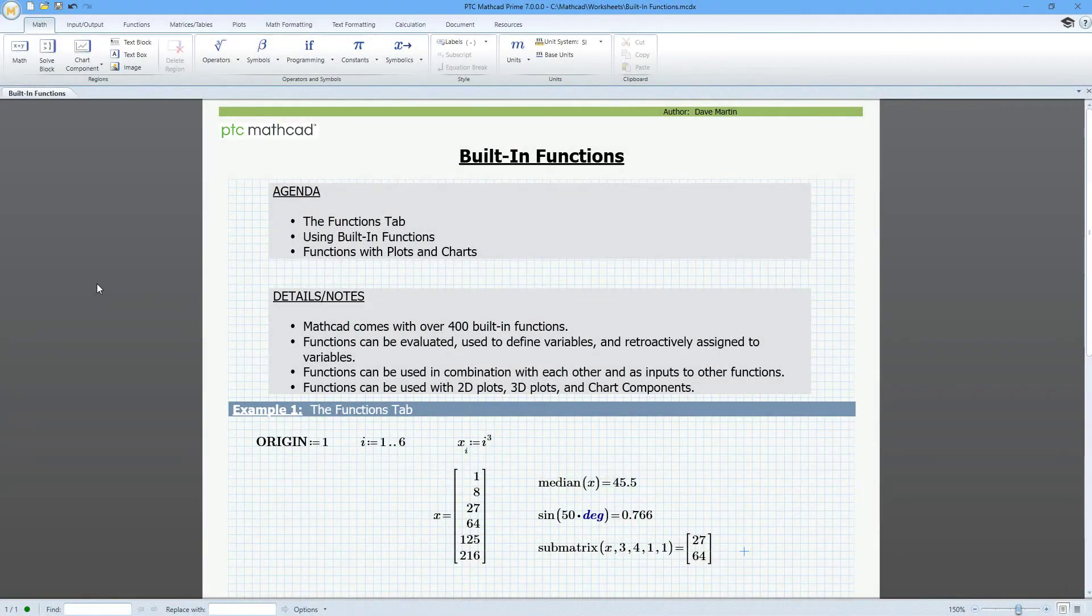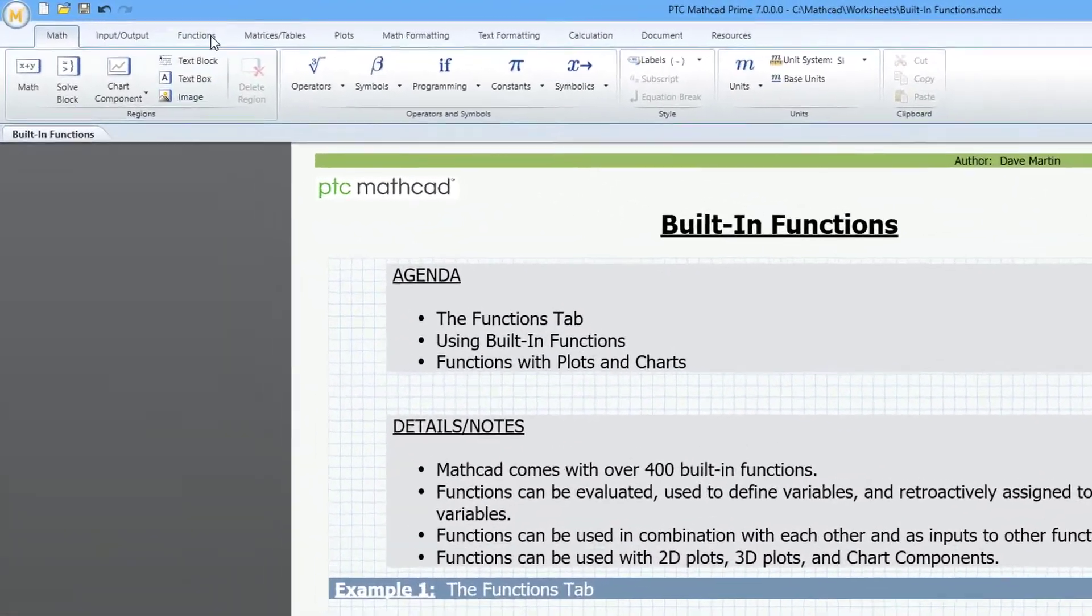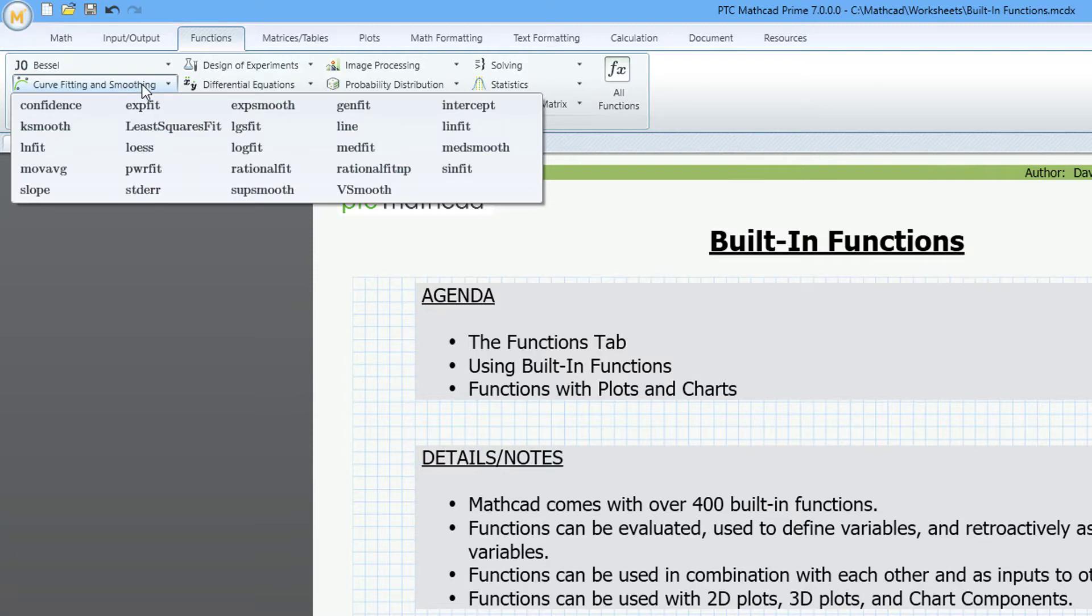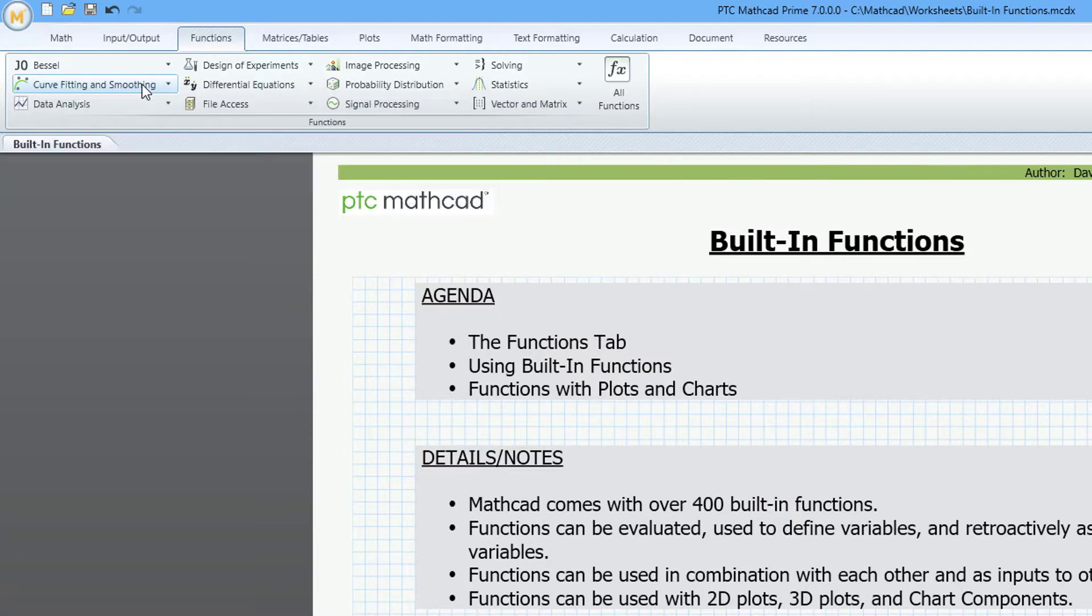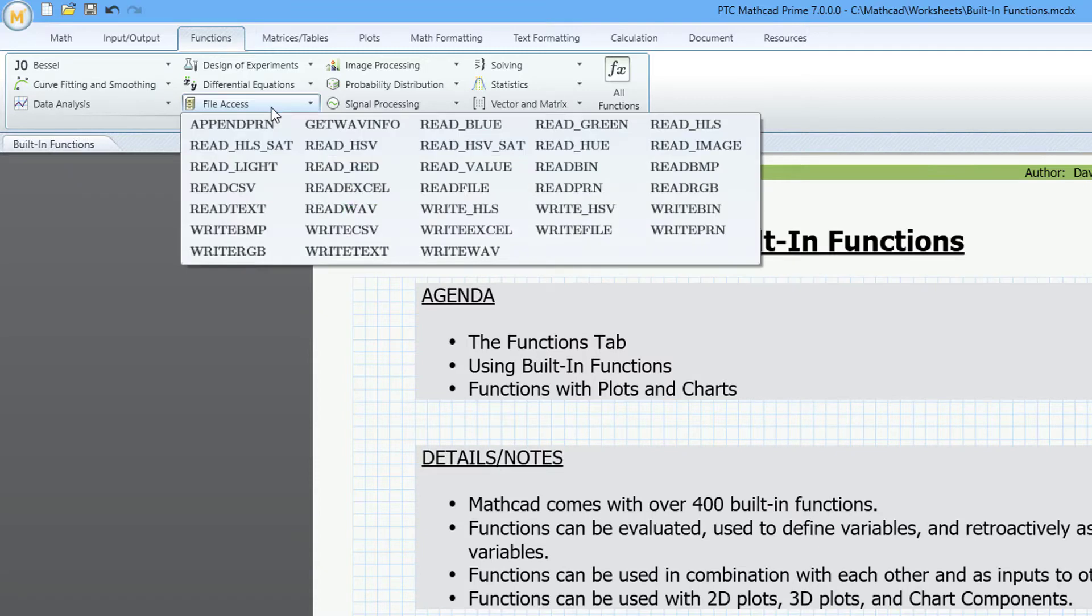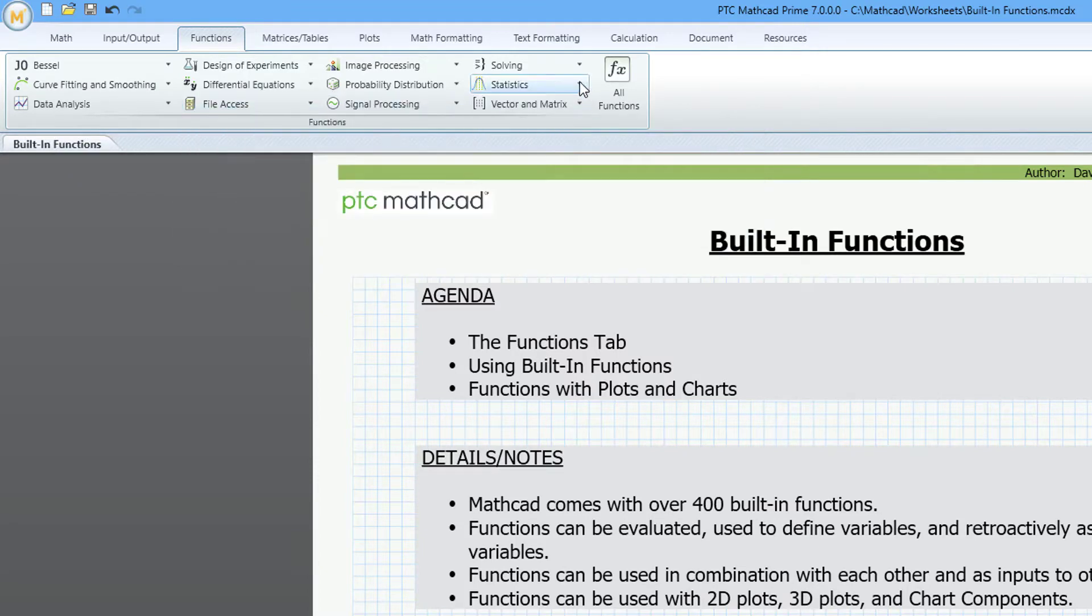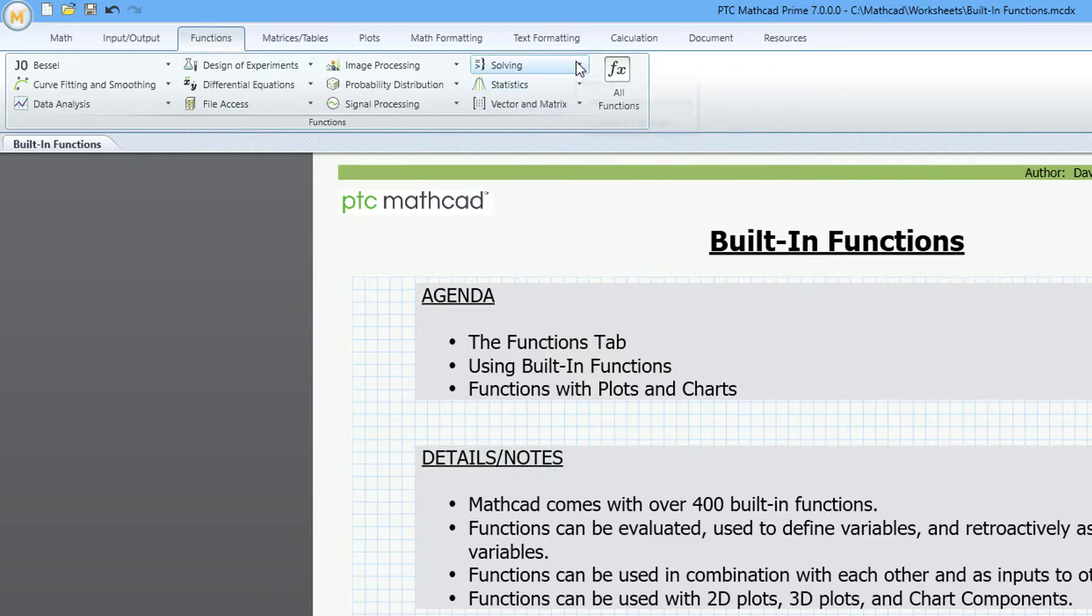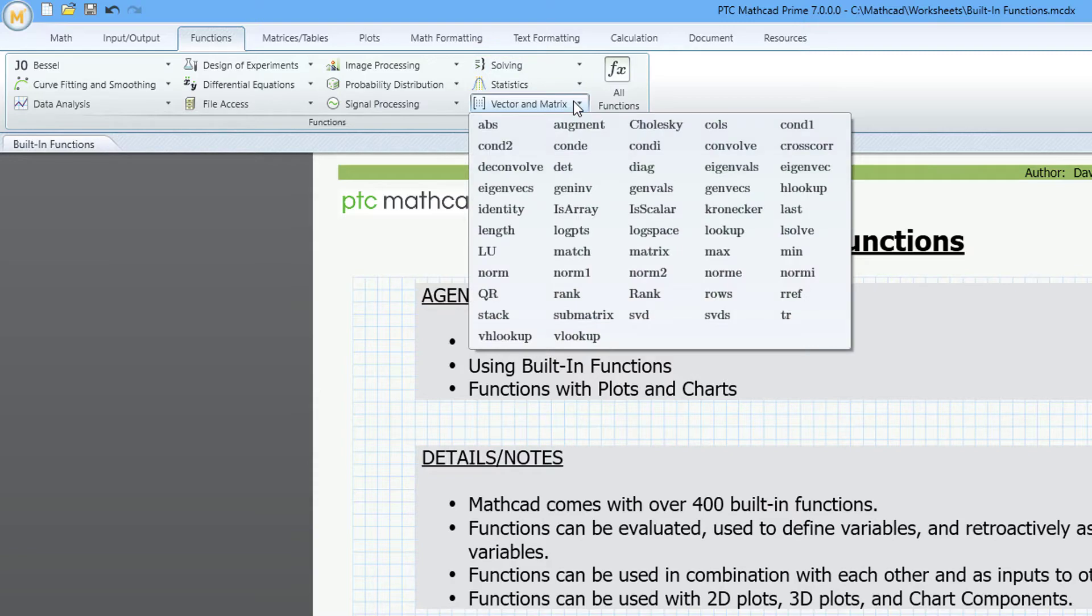MathCAD comes with over 400 built-in functions. These can be accessed from the Functions tab. Common functions are grouped in the ribbon including curve fitting and smoothing, file access for read and write operations, statistics, solving for performing optimization, and vector and matrix functions, as well as many more.